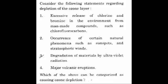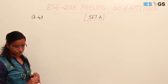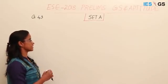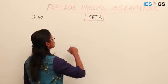Question 43: Consider the following statements regarding depletion of the ozone layer. First, excessive release of chlorine and bromine from man-made compounds such as chlorofluorocarbons. Second, occurrence of certain natural phenomena like sunspots and stratospheric winds. Third, degradation of materials by ultraviolet radiation. Fourth, major volcanic eruptions. Which of the above can be categorized as causing ozone depletion?